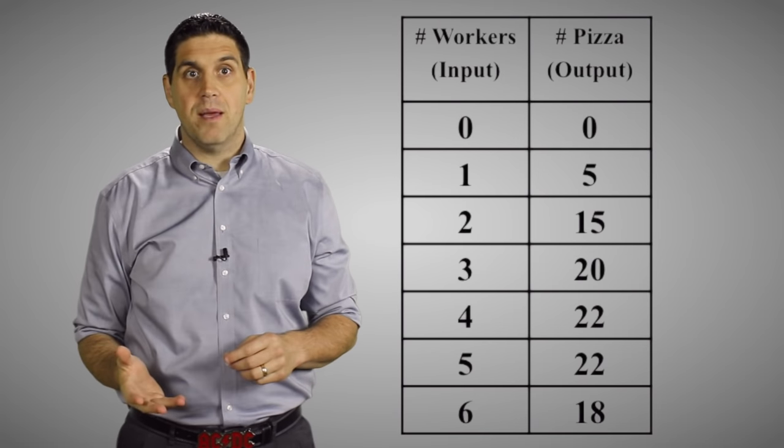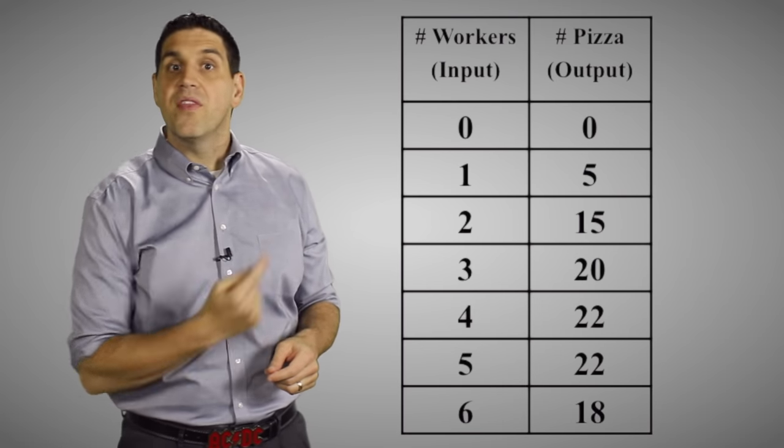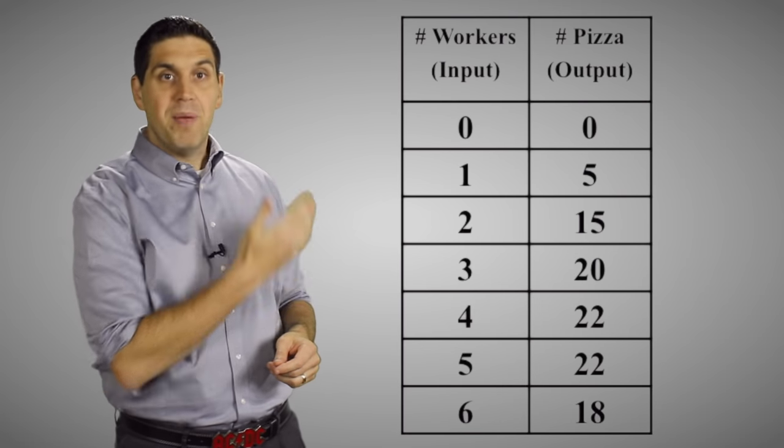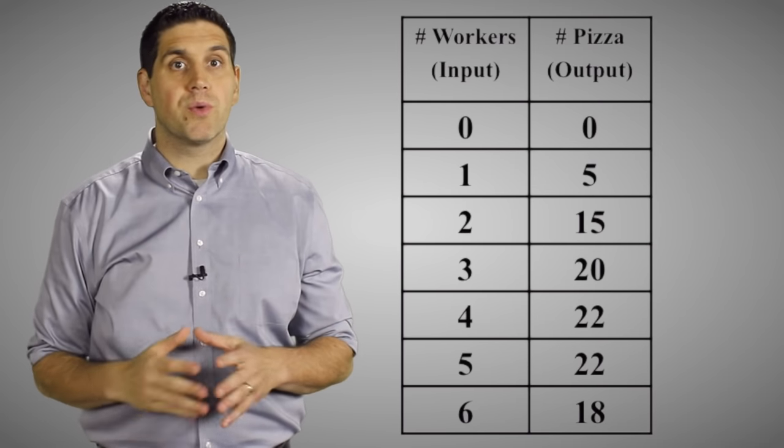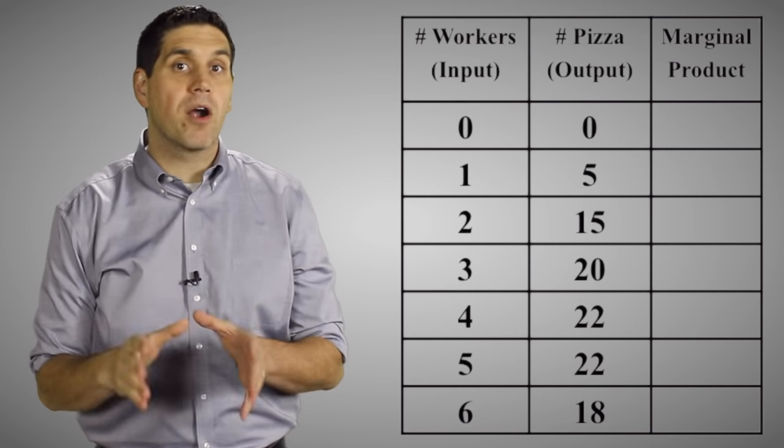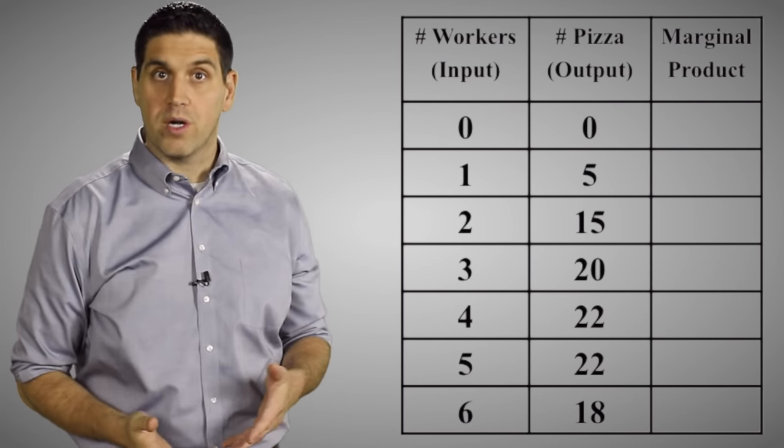Here's some made up numbers to help you understand the concept. This first column is number of inputs, in this case workers. The second column is the number of output, the pizzas they can produce in 30 minutes. These numbers show the law of diminishing marginal returns, but it's easier to see them by calculating something called the marginal product. That's the additional output generated from hiring one additional worker.